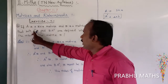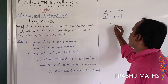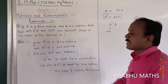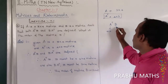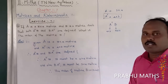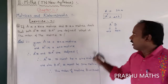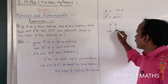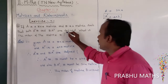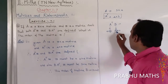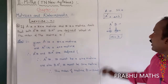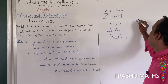Next, consider A transpose into B. The order of A transpose is 4 by 3. Let the order of B be M by N. For matrix multiplication to be defined, the number of columns of the first matrix must equal the number of rows of the second matrix. So M must equal 3 — that is, the row of B is equal to 3.